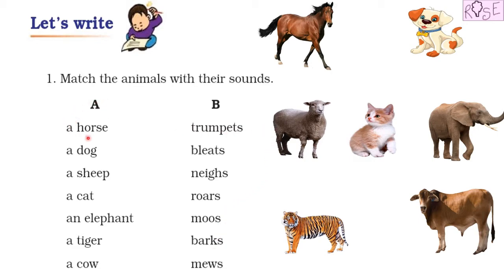So now let us start to match the name of the animal with the sound they make. The first one is a horse. What sound does a horse make? Does it trumpet? Does it bleat? Does it neigh? Does it roar? Does it moo? Does it bark? Or does it mew? So a horse neighs. Yes, a horse neighs. Let us write the correct sound under the picture of the horse.